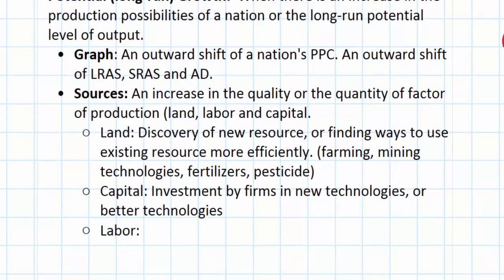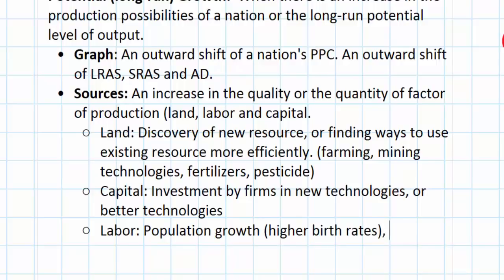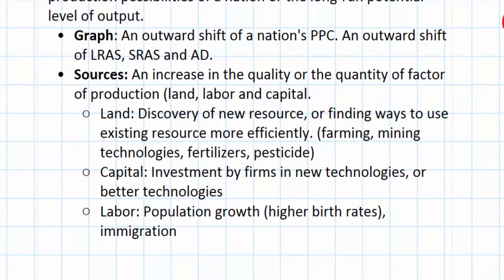Finally, labor. How do you increase the quantity of labor? Population growth and higher birth rates will, in the very long run, increase the productive capacity of the economy. More people entering the labor force increases the potential output and aggregate demand in a nation, hence shifting both LRAS and SRAS outward, and aggregate demand as well. In addition to population growth, immigration also increases the potential output of a nation, causing long-run economic growth.